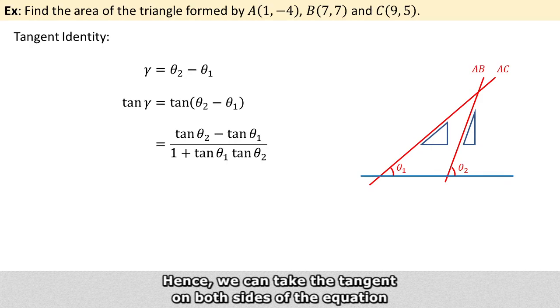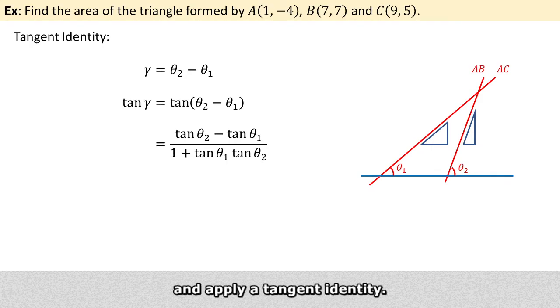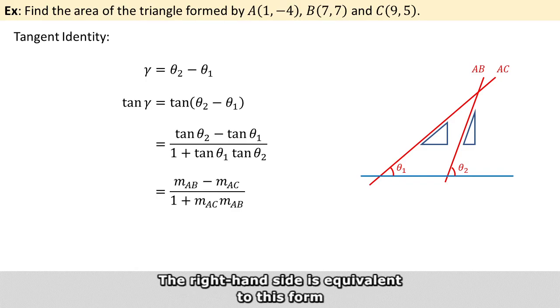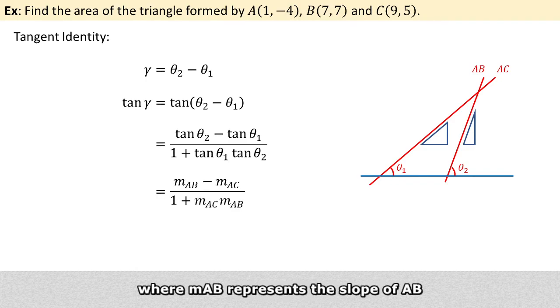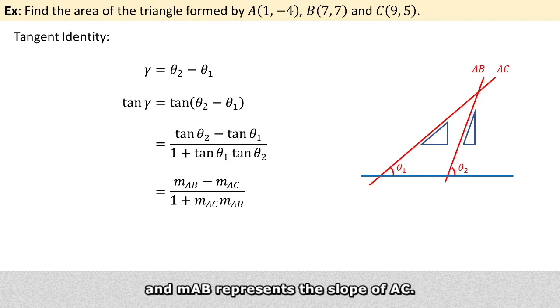Hence, we can take the tangent on both sides of the equation and apply a tangent identity. The right-hand side is equivalent to this form, where m_AB represents the slope of AB and m_AC represents the slope of AC.